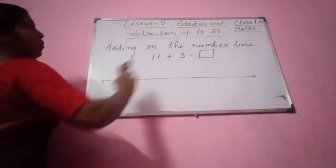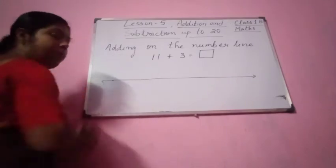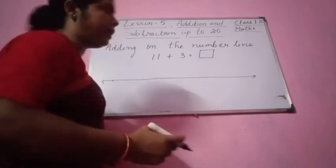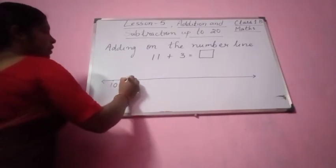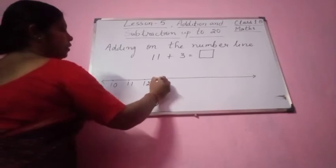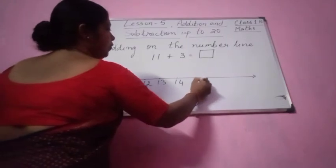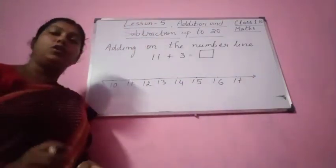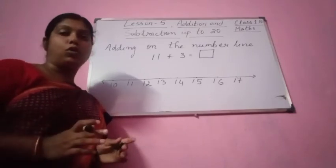Please draw a number line like this. Put 2 arrows. See, 11 is here — you can start from 10, take 1 number before. Always start from 1 number before; it will be easy for you. So from 10: 10, 11, 12, 13, 14, 15, 16, 17. You can continue till 20 also if you want.